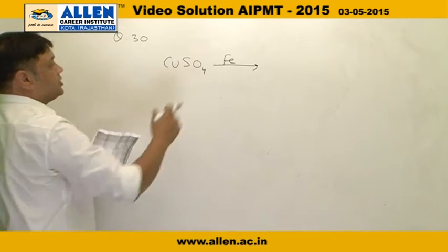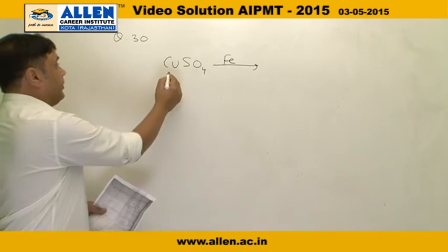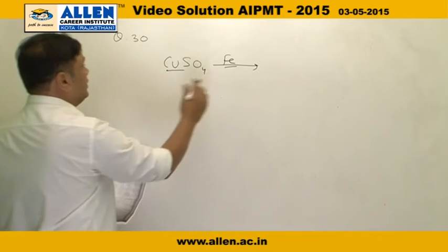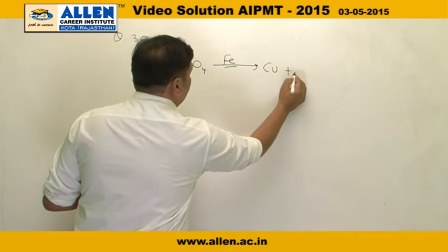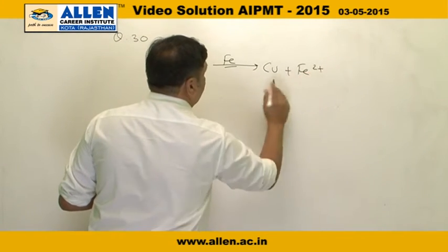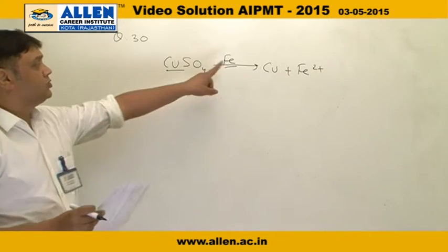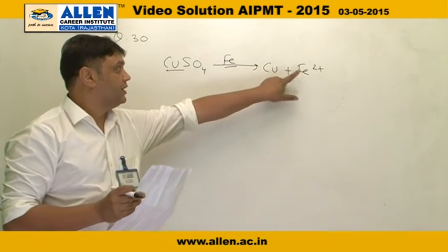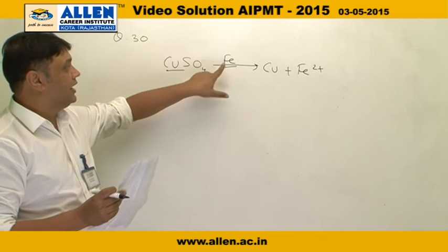This is a redox reaction in which copper 2+ and iron react together, and eventually copper metal and Fe2+ are obtained. When iron is oxidized into Fe2+, we say that in this reaction iron is oxidized.